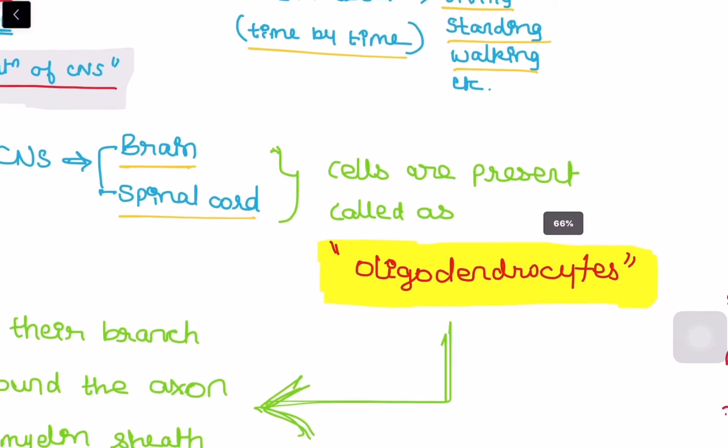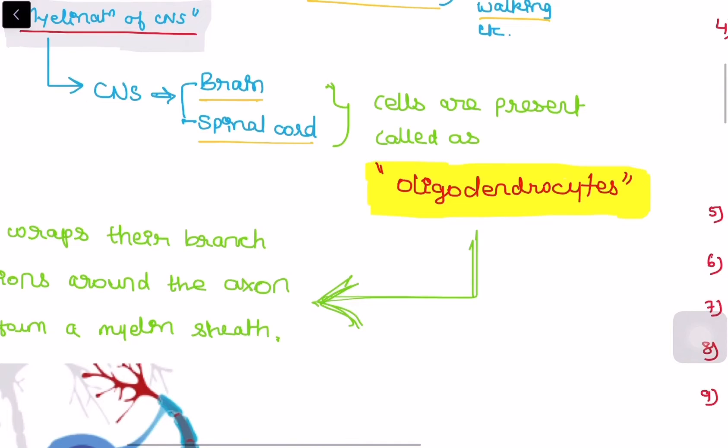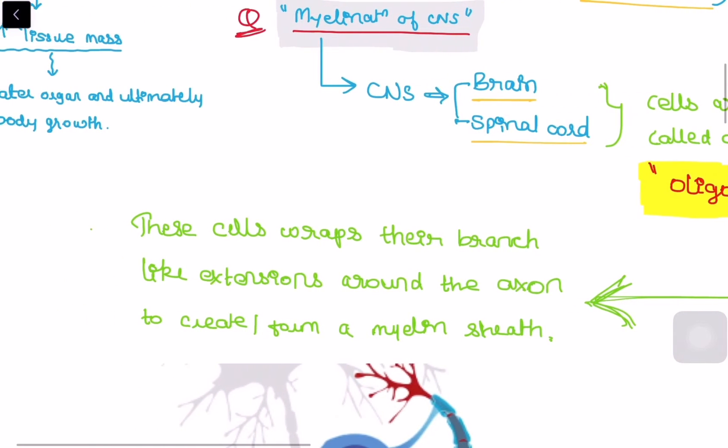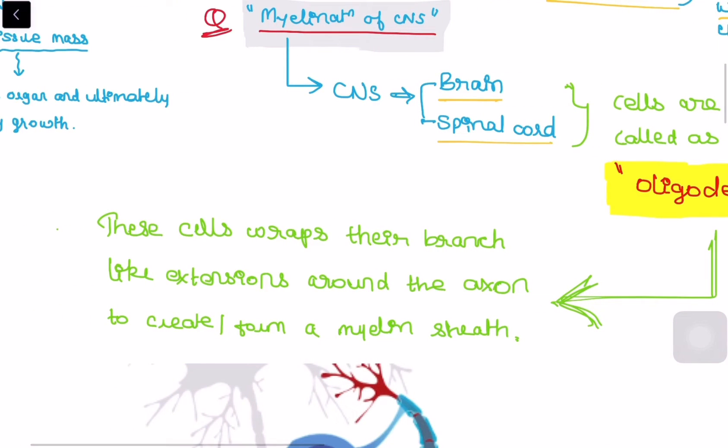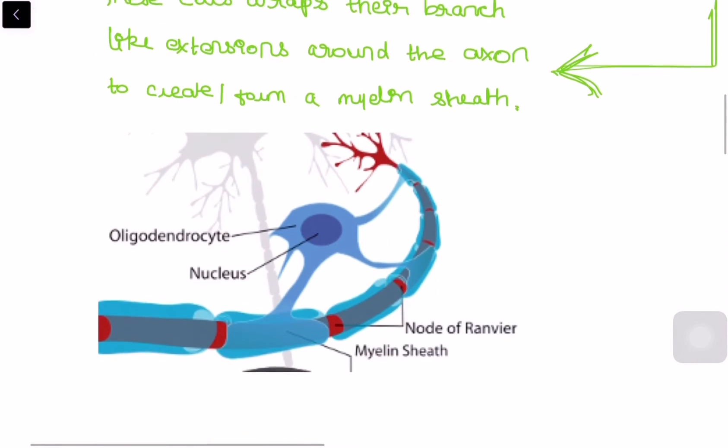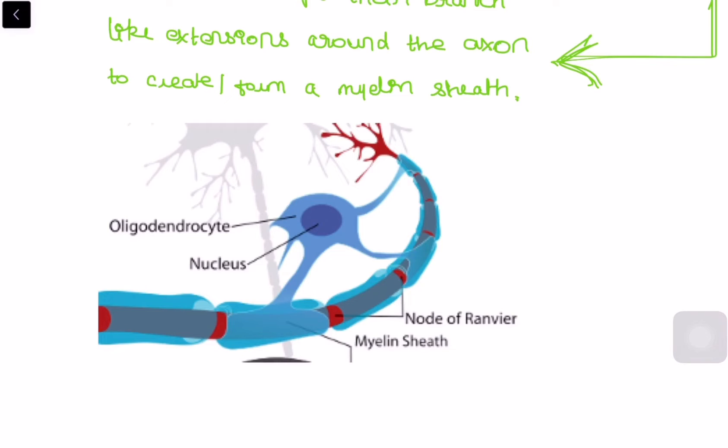And there are the cells. These cells are called as oligodendrocytes that are present in the brain and spinal cord. What does this cells do? This cells wraps their branch like extensions around the axons to create or form a myelin sheath. As you can see here, these are the oligodendrocytes. This is the oligodendrocyte that is wrapping their sheath like extensions around the axons and they are forming the myelin sheath.